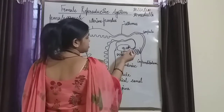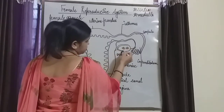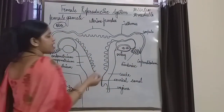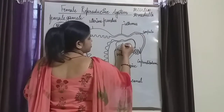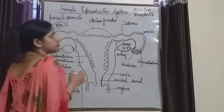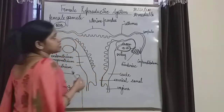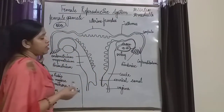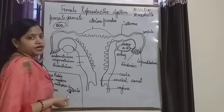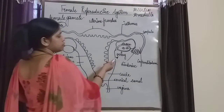The ovary consists of a double membrane, and the stroma is filled in between the membranes. The inner membrane is said to be the medulla, and the external or peripheral membrane is said to be the cortex. So this is the ovary.